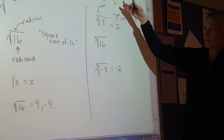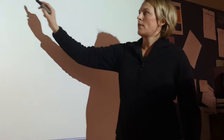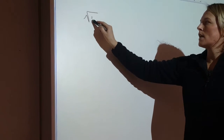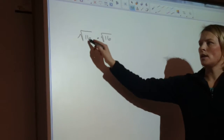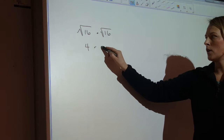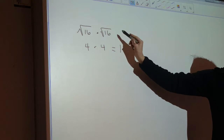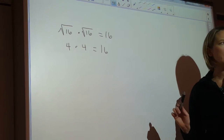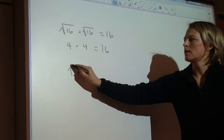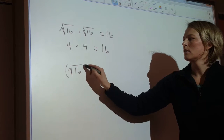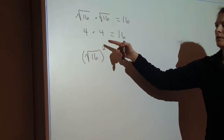One part of rationalizing the denominator is you need to understand how these radicals work. Another piece is how do you multiply radicals. So let's say this is the square root of 16 and I want to multiply by the square root of 16 — that's 4 times 4, which is 16. Another way to write this is the square root of 16 times itself is the square root of 16 squared. The squared undoes the square root.